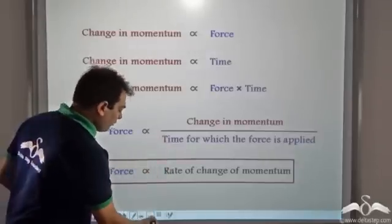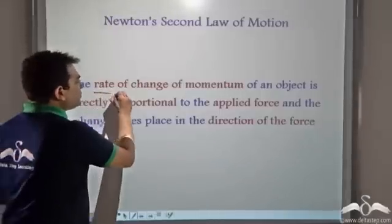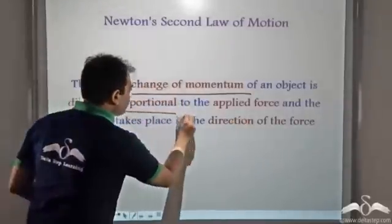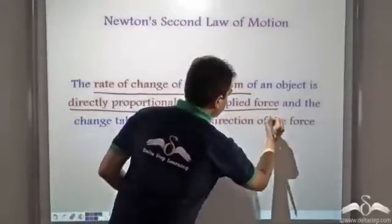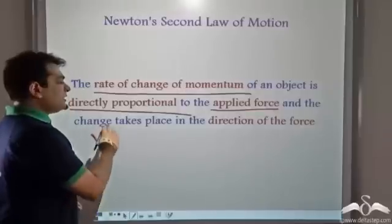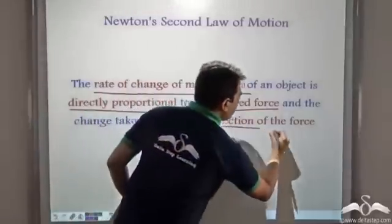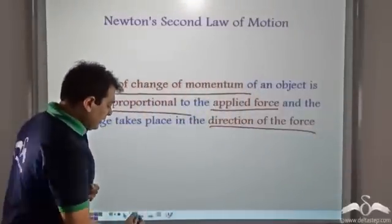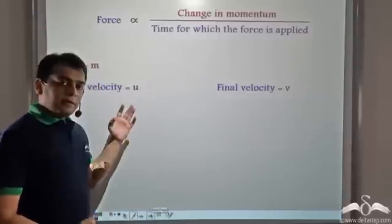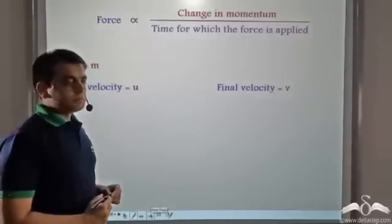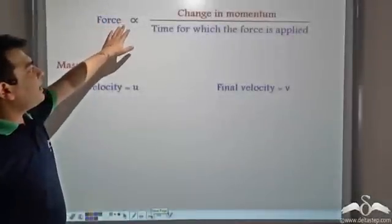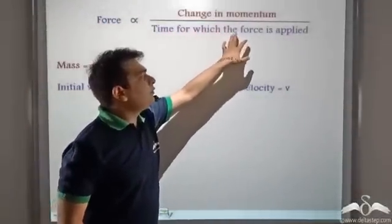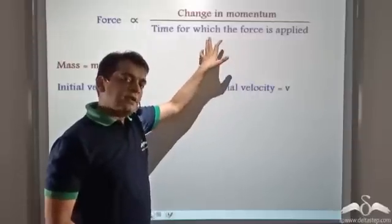In his second law of motion, Newton states that the rate of change of momentum of an object is directly proportional to the applied force, and the change takes place in the direction of the force. Now let us try to quantify this law. We know that force is directly proportional to change in momentum by time for which the force is applied — that is, rate of change of momentum.